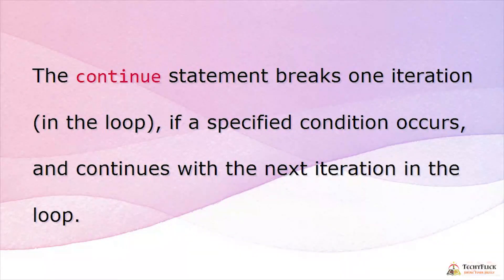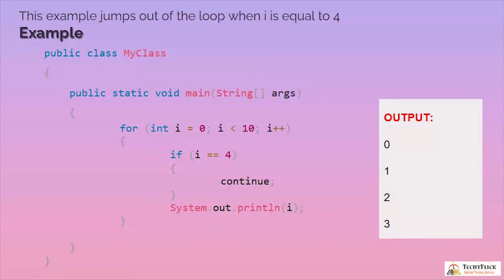The continue statement breaks one iteration in the loop if a specified condition occurs and continues with the next iteration. Using the same program with i < 10 and increment operator: when i equals 4, continue is triggered, skipping the print for i=4 but continuing the loop. Values 0, 1, 2, 3 are printed, then 4 is skipped, and 5 through 9 are printed. That is the difference between break and continue.